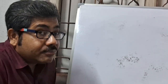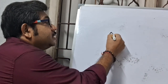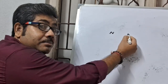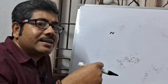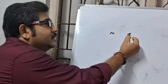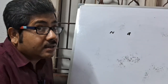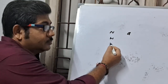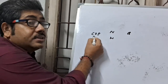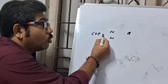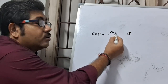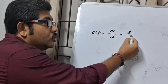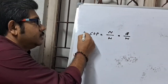COP is the ratio of refrigerating effect, or cooling effect, denoted by N, or heat absorbed or heat extracted from the cold body, that is Q, to the heat equivalent of mechanical work done on the refrigerating machine, that is W, work done. So, coefficient of performance is the ratio of N by W — cooling effect or refrigerating effect by work done. This is COP.